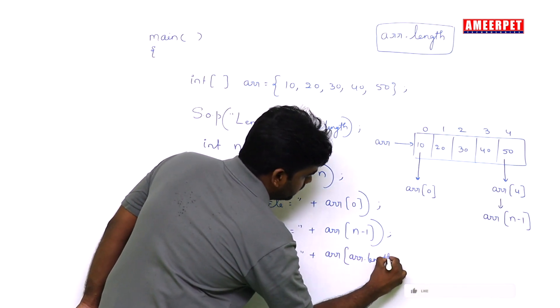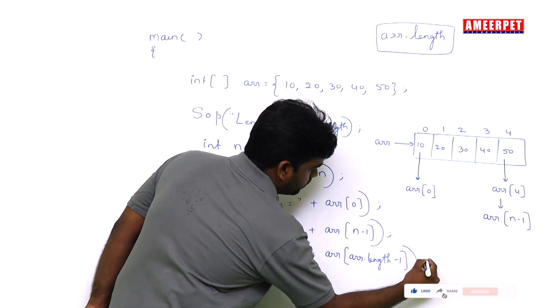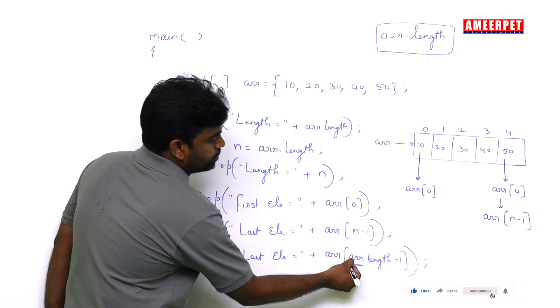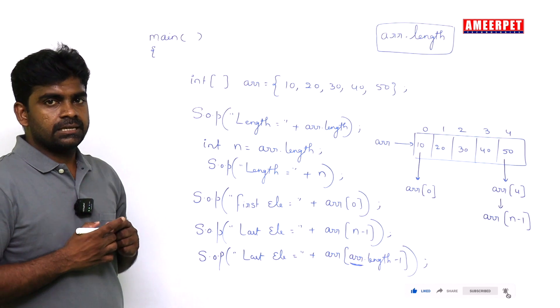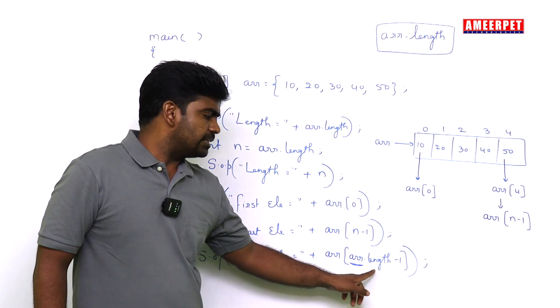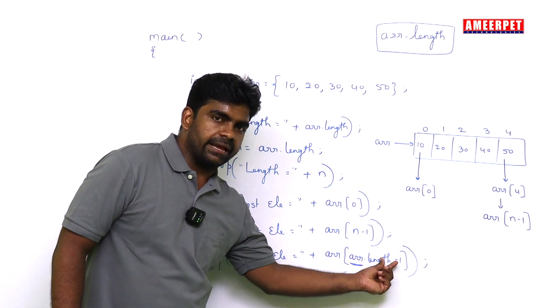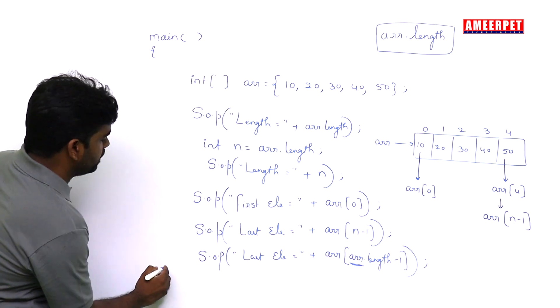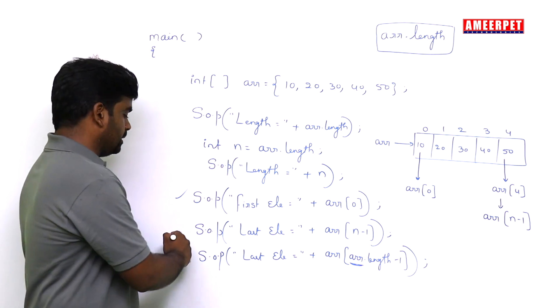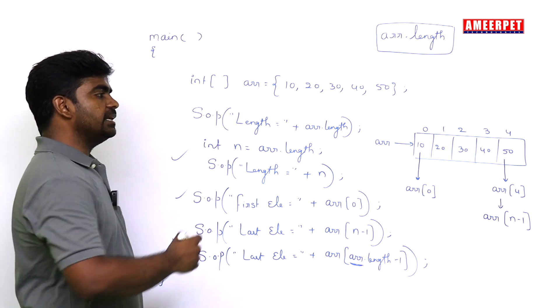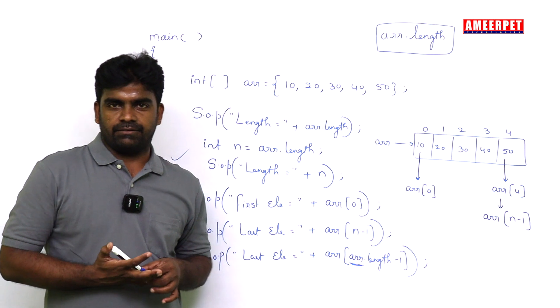Everyone will forget to write arr dot. Most people will forget to write this while practicing. Directly they will call arr of length minus 1. No, it's arr of that array dot length minus 1. That is the simple way of printing the first element, last element, and finding the length of array in Java.